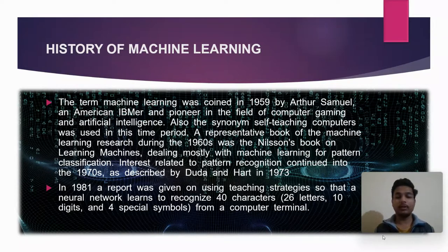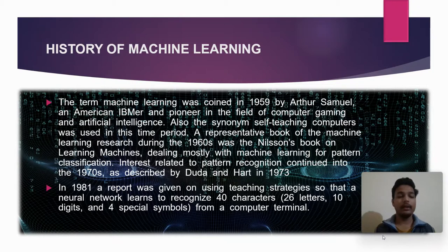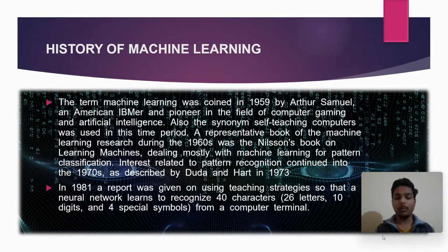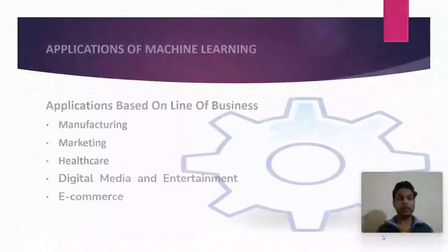A representative book of machine learning research during the 1960s was Nelson's book on learning machines, dealing mostly with machine learning for pattern classification. Research related to pattern recognition continued in the 1970s as described by Duda and Hart in 1973. In 1981, a report was given on using teaching strategies so that a neural network learns to recognize 40 characters — 26 letters, 10 digits, and 4 special symbols — from a computer terminal.